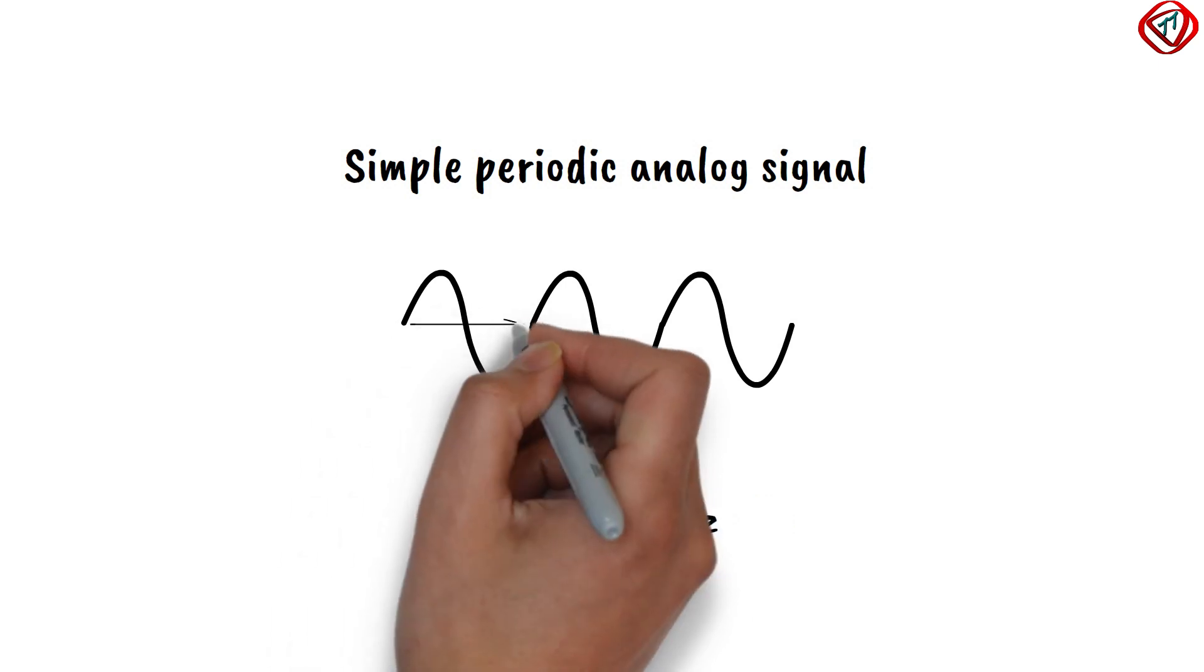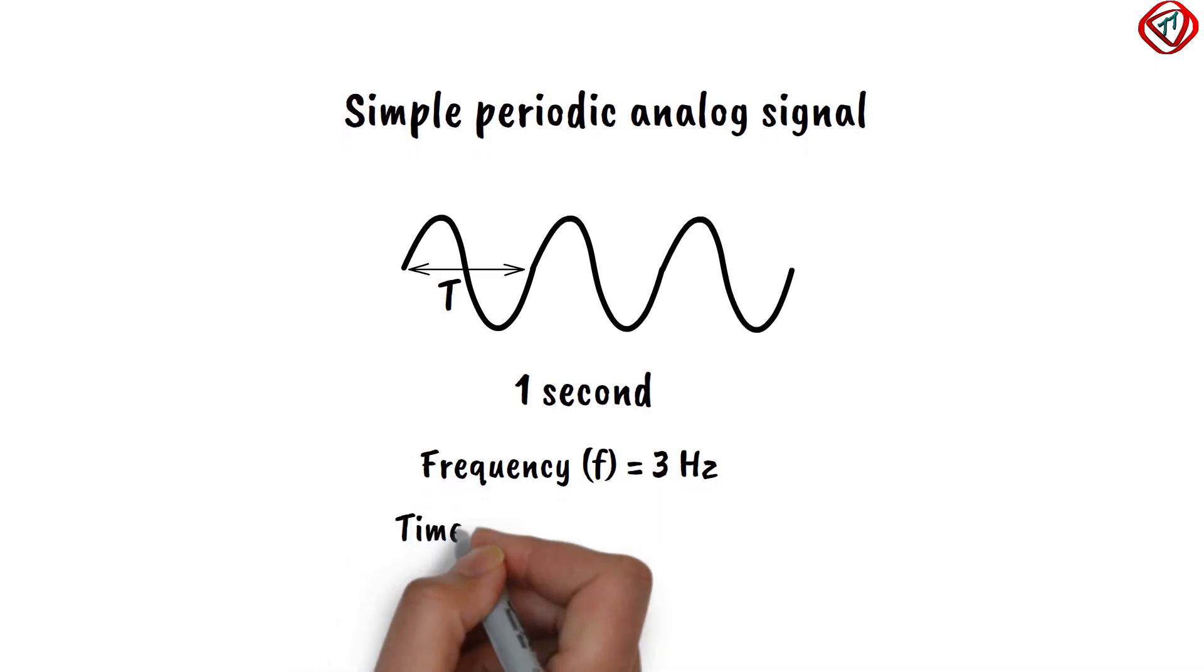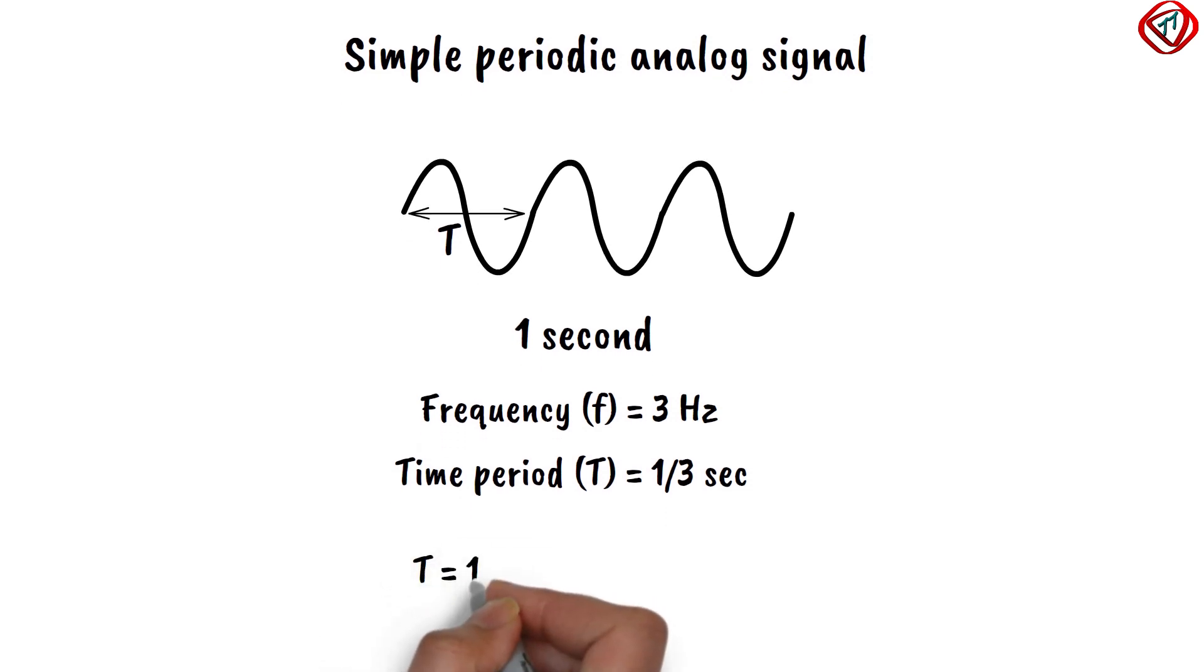The time it takes to complete one cycle is called its time period. Here, the time period is 1 by 3 seconds. That is, the time period is inverse of frequency, or frequency is inverse of the time period.